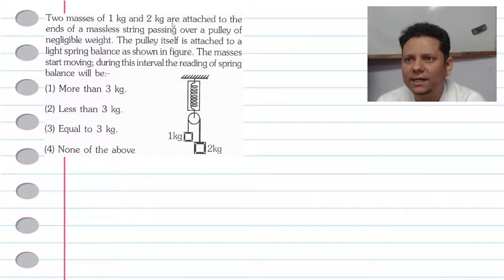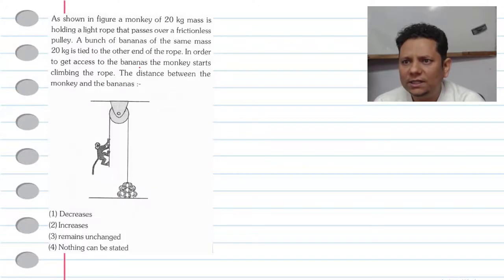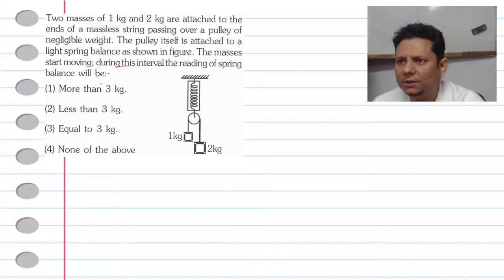Two masses of 1 kg and 2 kg are attached to ends of a massless string passing over a pulley of negligible weight. The pulley itself is attached to a light spring balance as shown in the figure. The masses start moving. During this interval the reading of spring balance will be more than 3 kg, less than 3 kg, or equal to 3 kg, and none of the above.